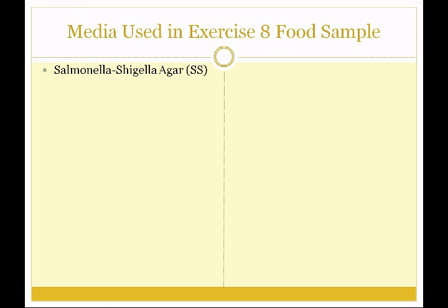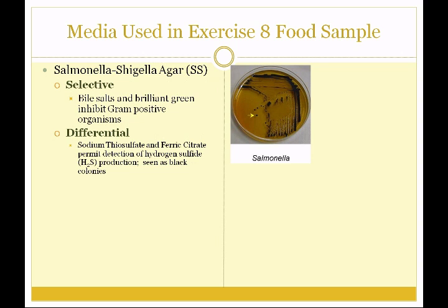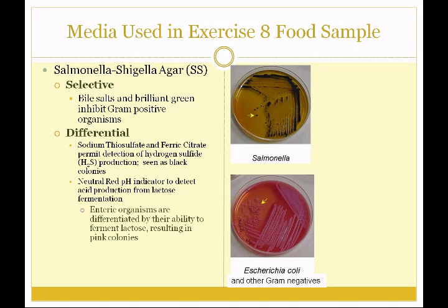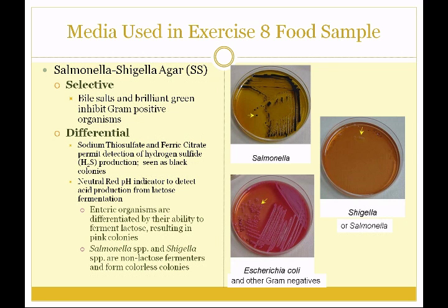We'll also be using SS or Salmonella-Shigella agar. This is a selective medium with bile salts and brilliant green, which inhibit gram-positive organisms and allow gram-negatives to grow. It's also a differential medium containing sodium thiosulfate and ferric citrate, which allows us to detect production of hydrogen sulfide gas, causing a black colony — seen with Salmonella and also with Proteus. A pH indicator, neutral red, lets us know whether the organism ferments lactose. Enteric organisms like E. coli are lactose fermenters and give pink colonies. What we're looking for is either a colorless colony or one that turns black, which could indicate Salmonella or Shigella, both serious pathogens.